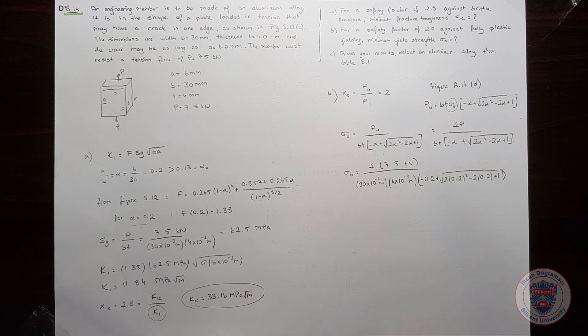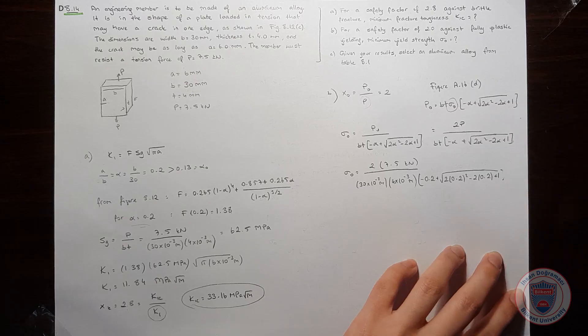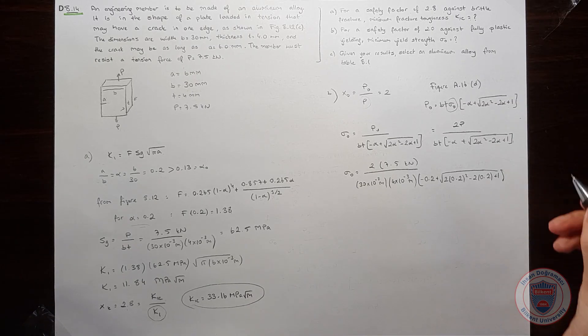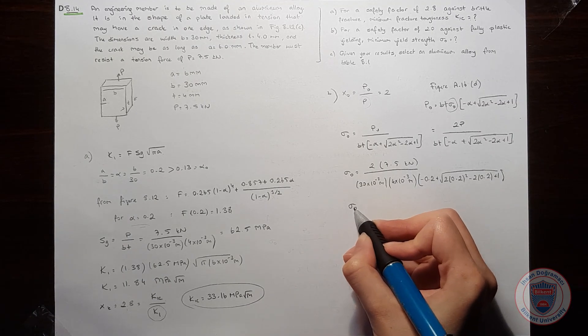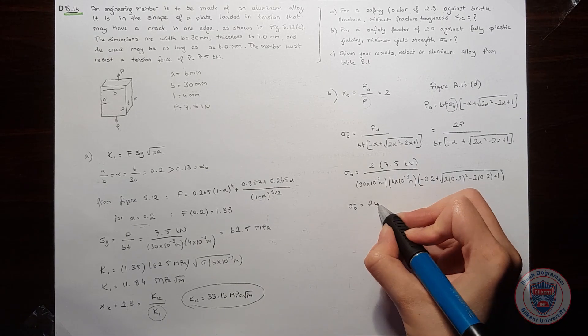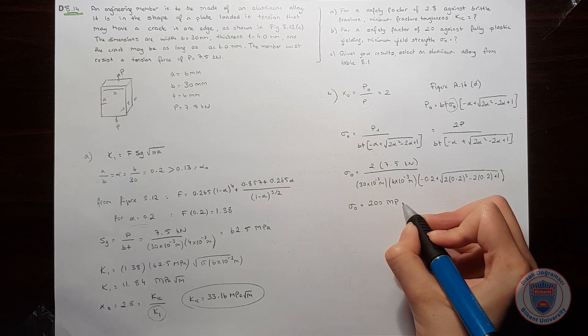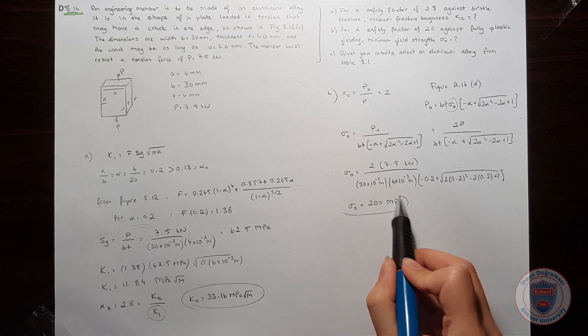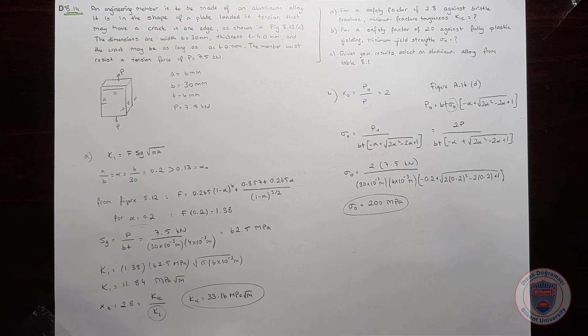All right. And when we calculate this, we saw that the minimum yield strength is 200 MPa. Now we are also done with part B.